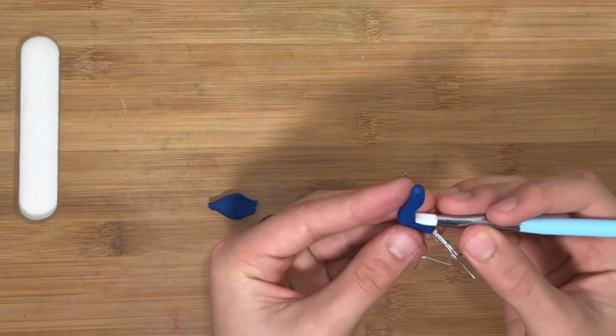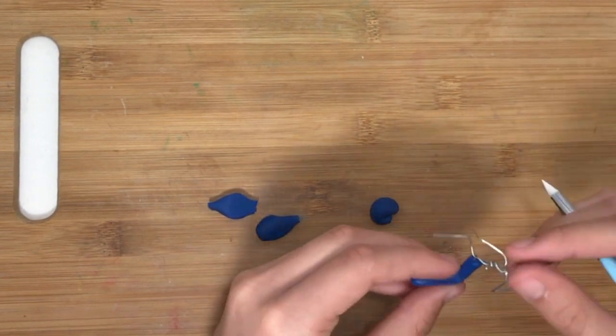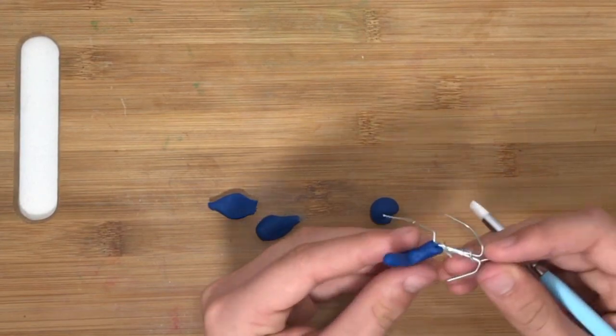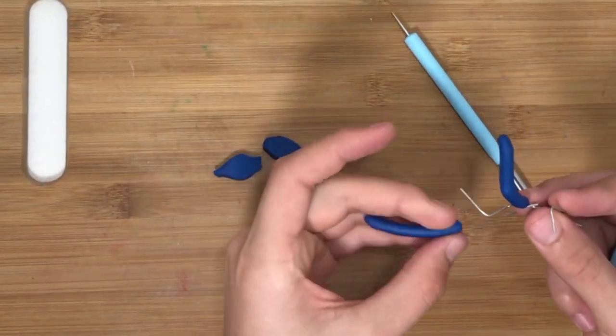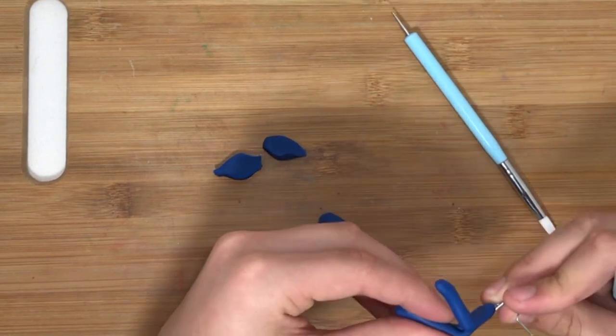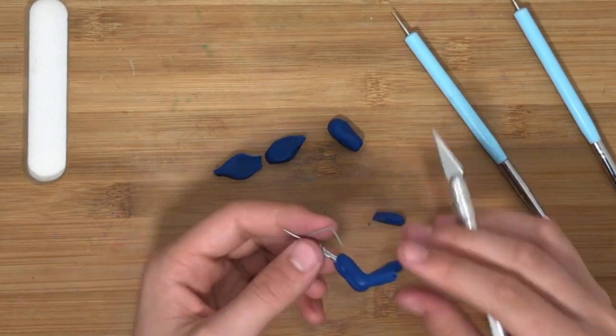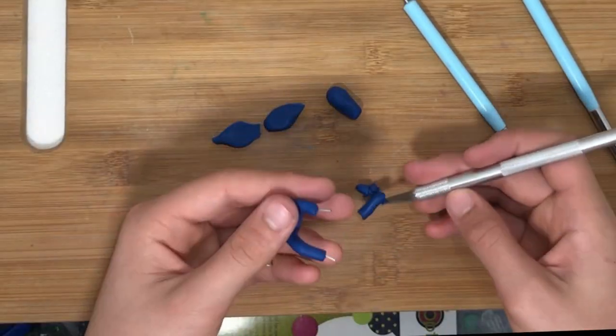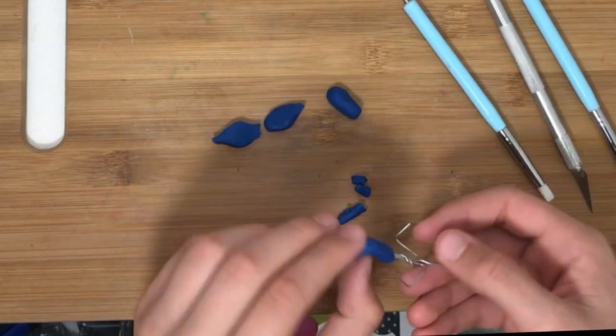It's easier to do it with a skeleton with wire because it gives something for the clay to hold on to and is easier to work with. Putting on his other leg, and we'll add some more details later on like his quills. We'll be adding some quill details, but first we just have the legs done.